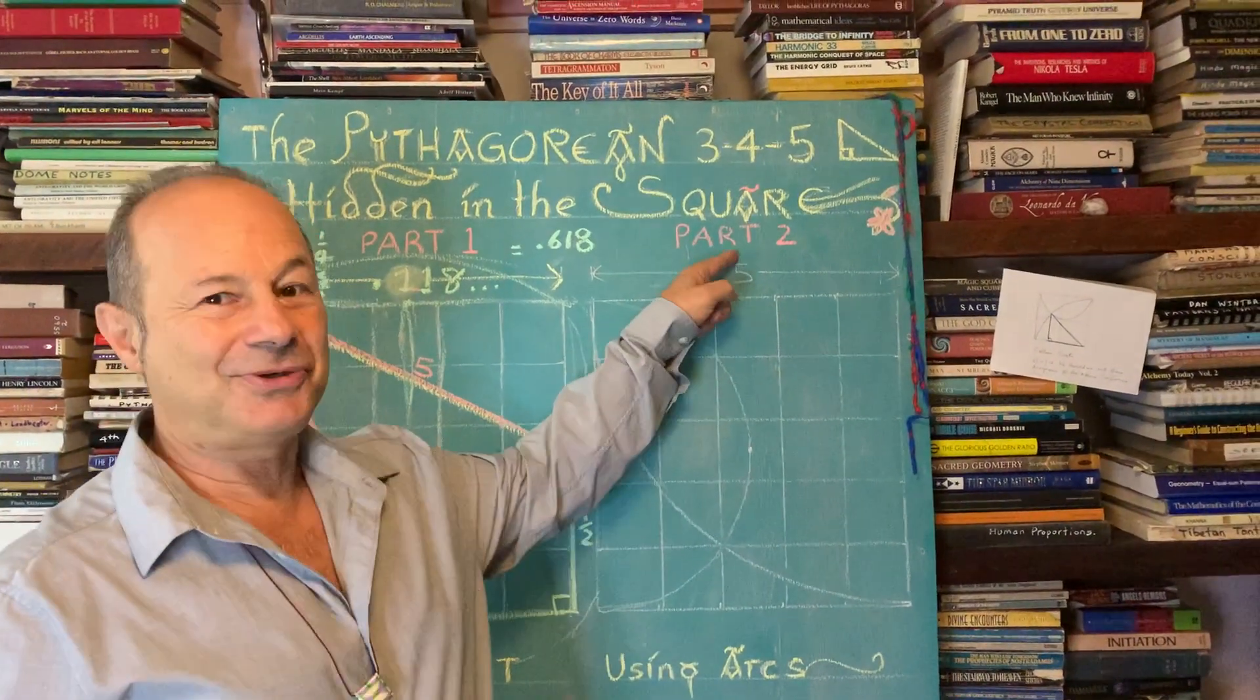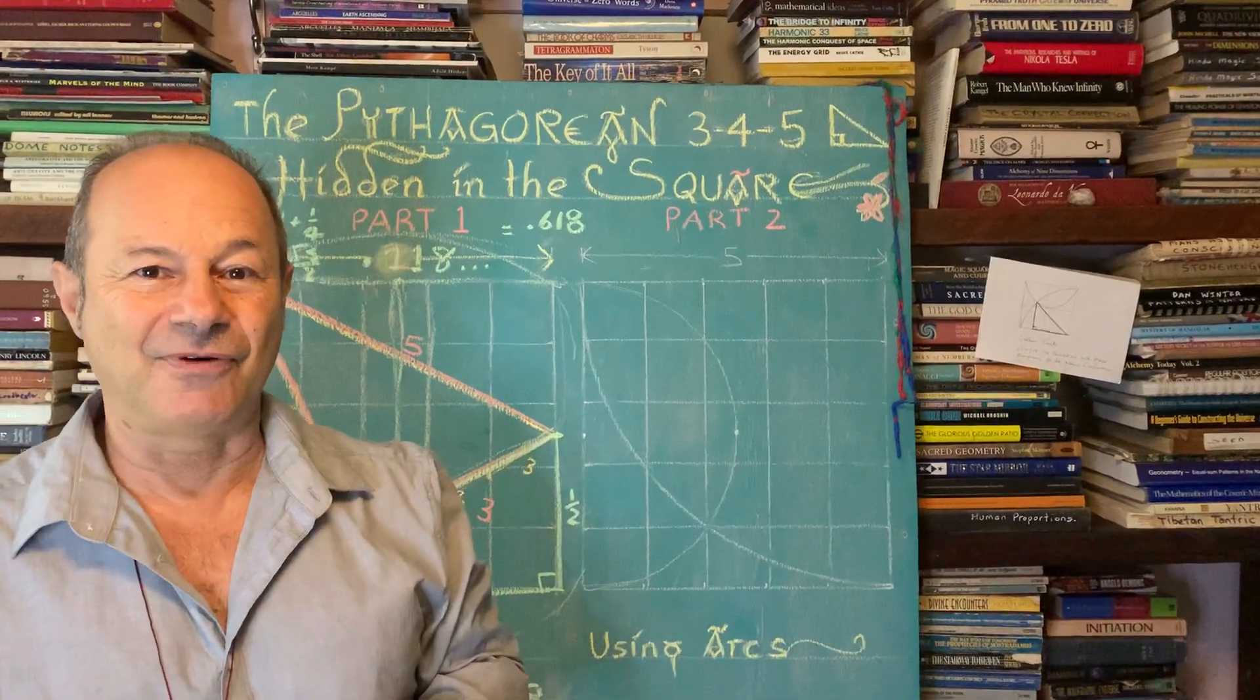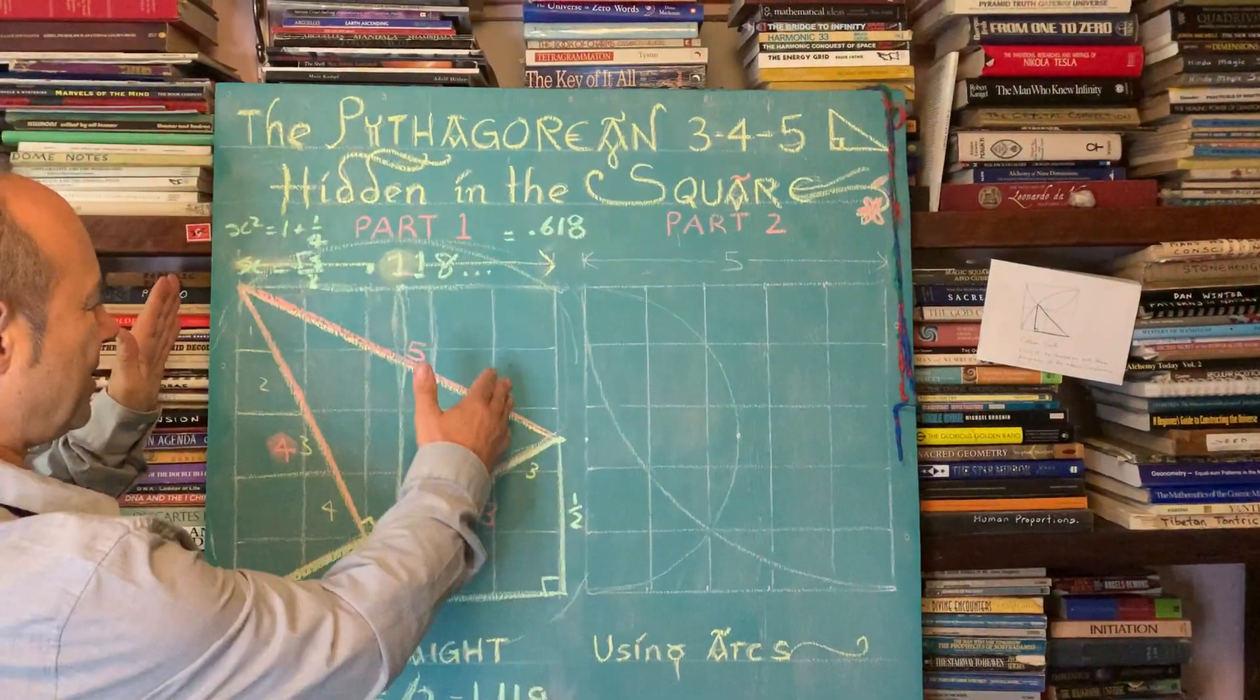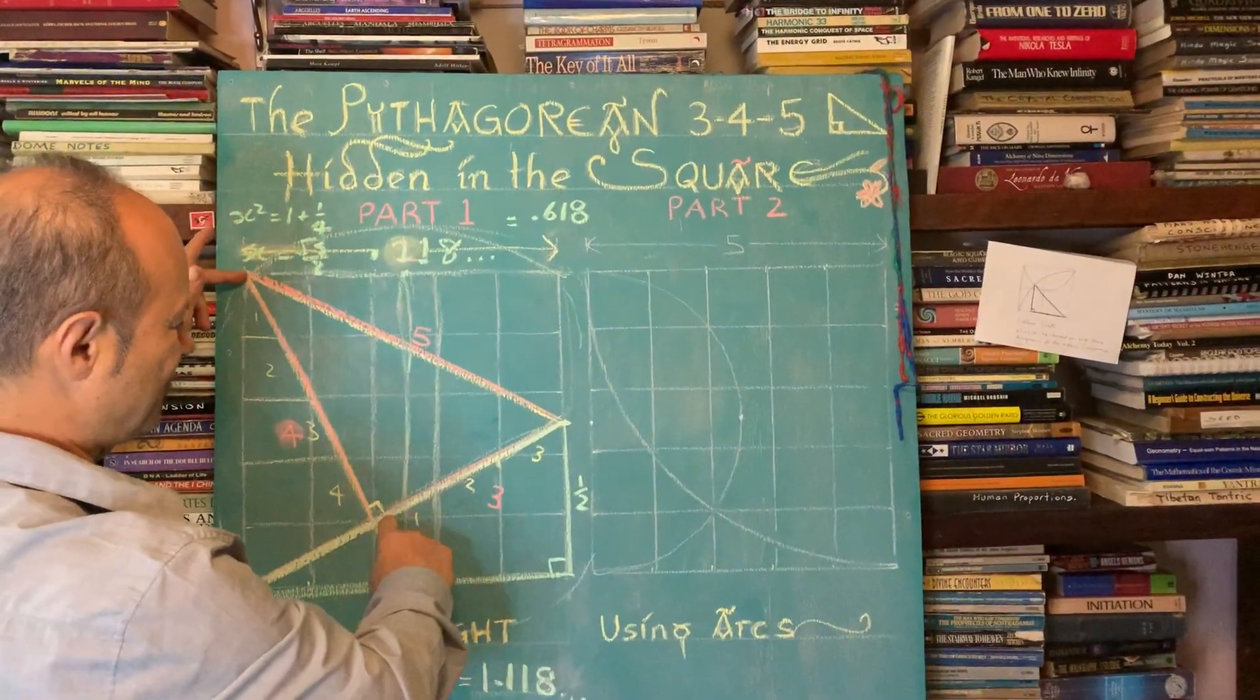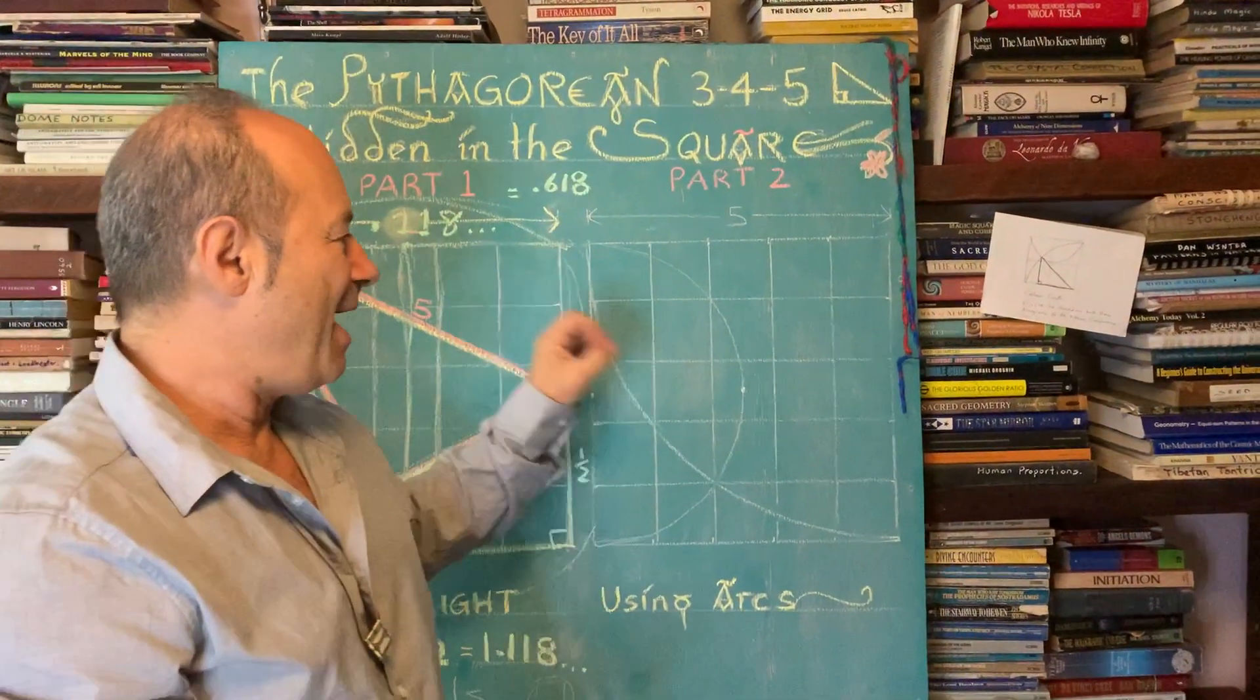This section is part two of our fascination with the Pythagorean 3-4-5 triangle. We just showed that the 3-4-5 triangle can be drawn using straight lines, but I have two other methods now where we just use arcs of the circle.